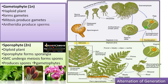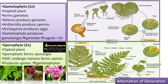Gametes are formed inside sex organs. The male sex organ is called the antheridium and the female sex organ is called the archegonium. The sperm cells, or male gametes, produced by the antheridium move towards the archegonium and fuse with the egg, finally forming the zygote. Thus the diploid stage continues again, as that zygote germinates to form the sporophytic plant.